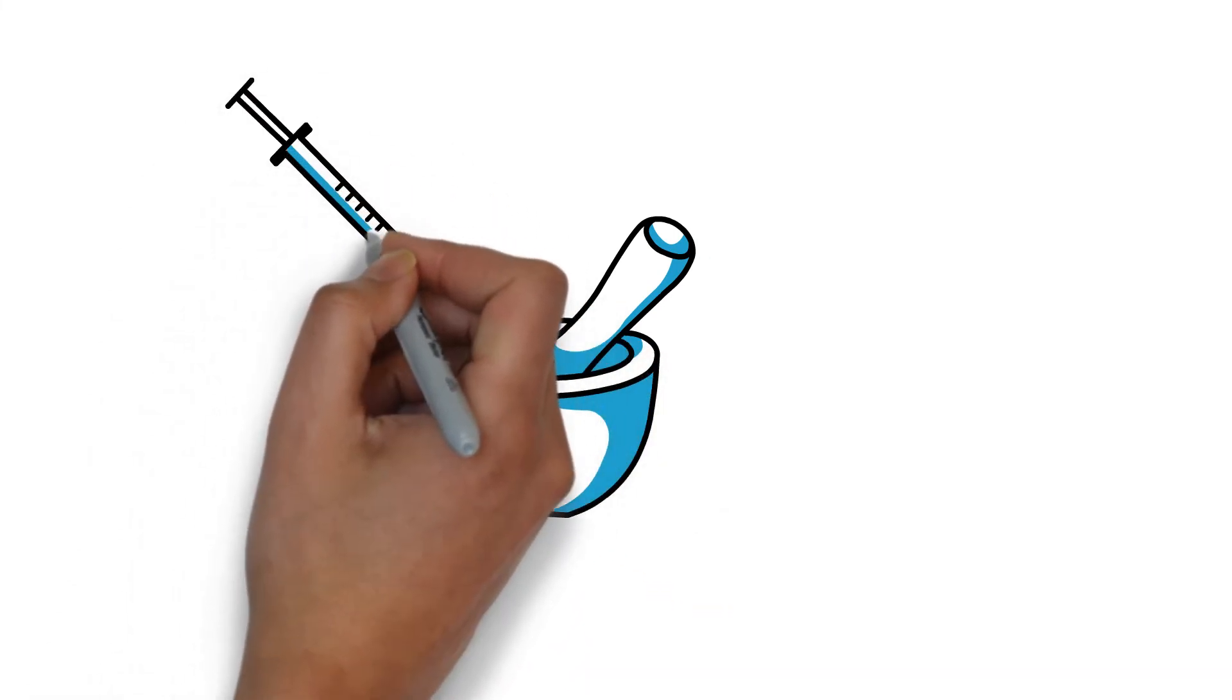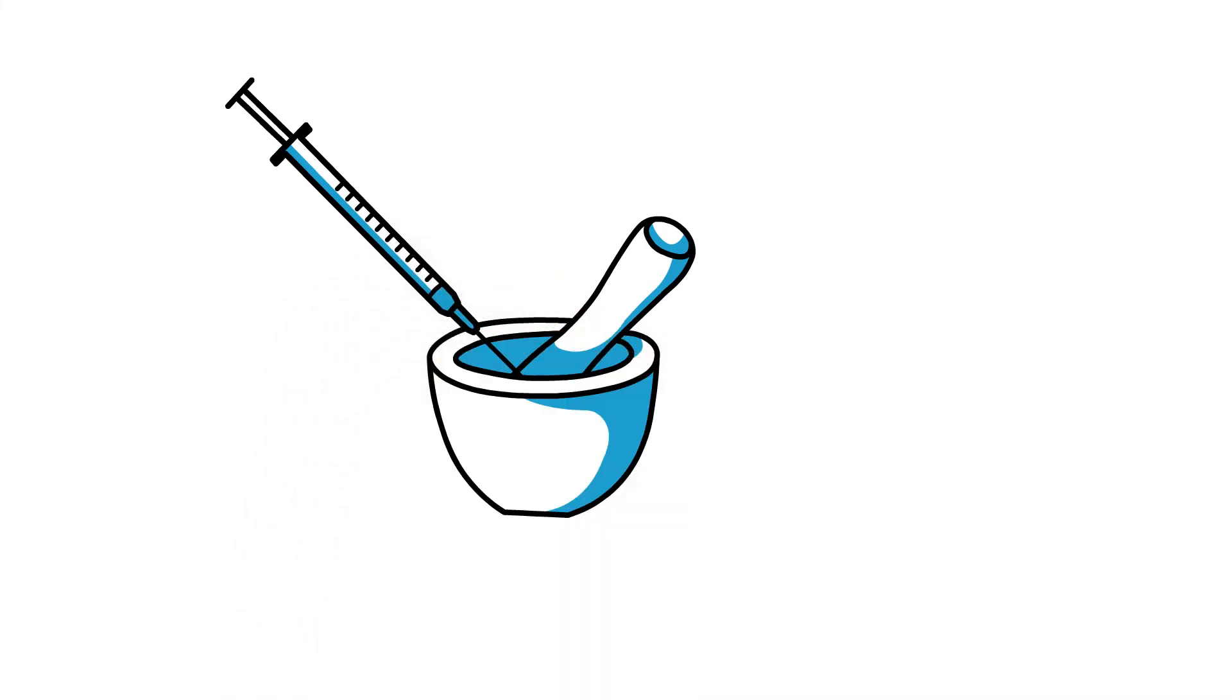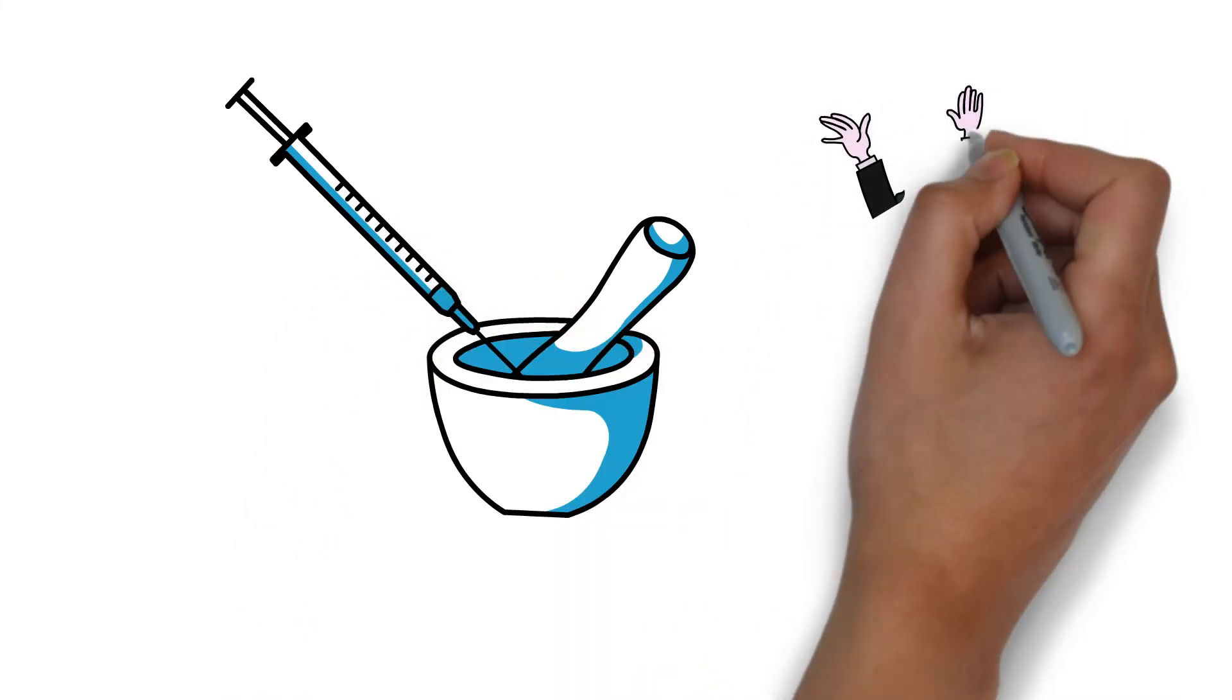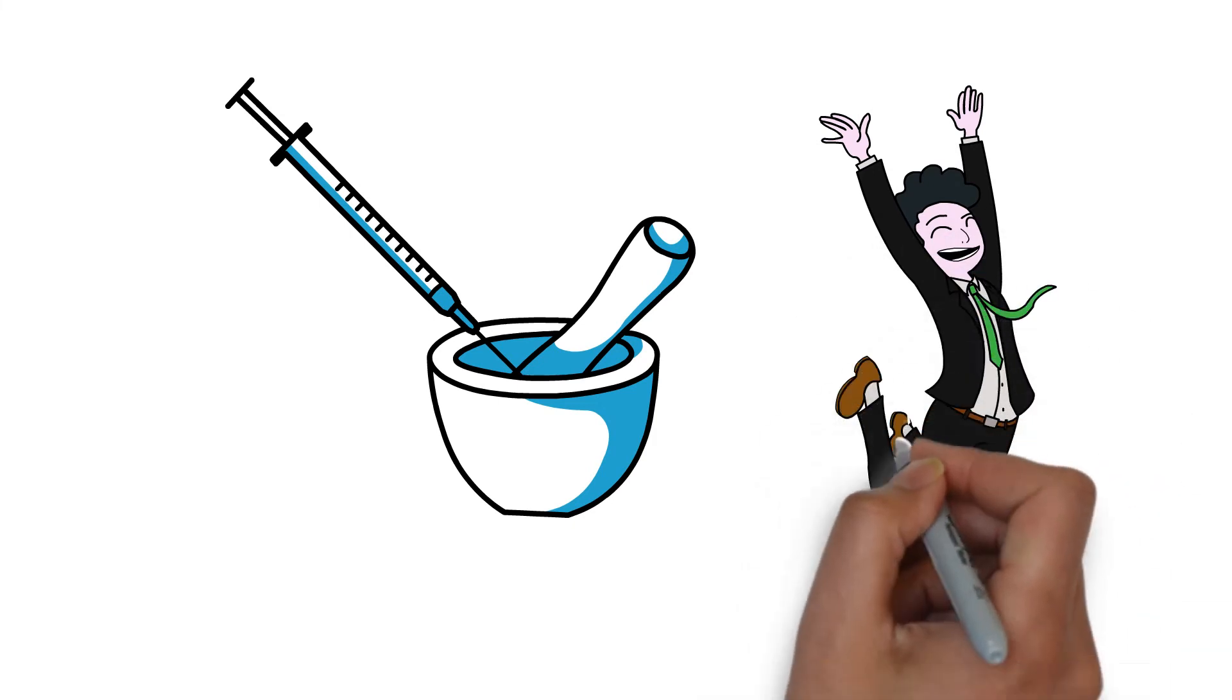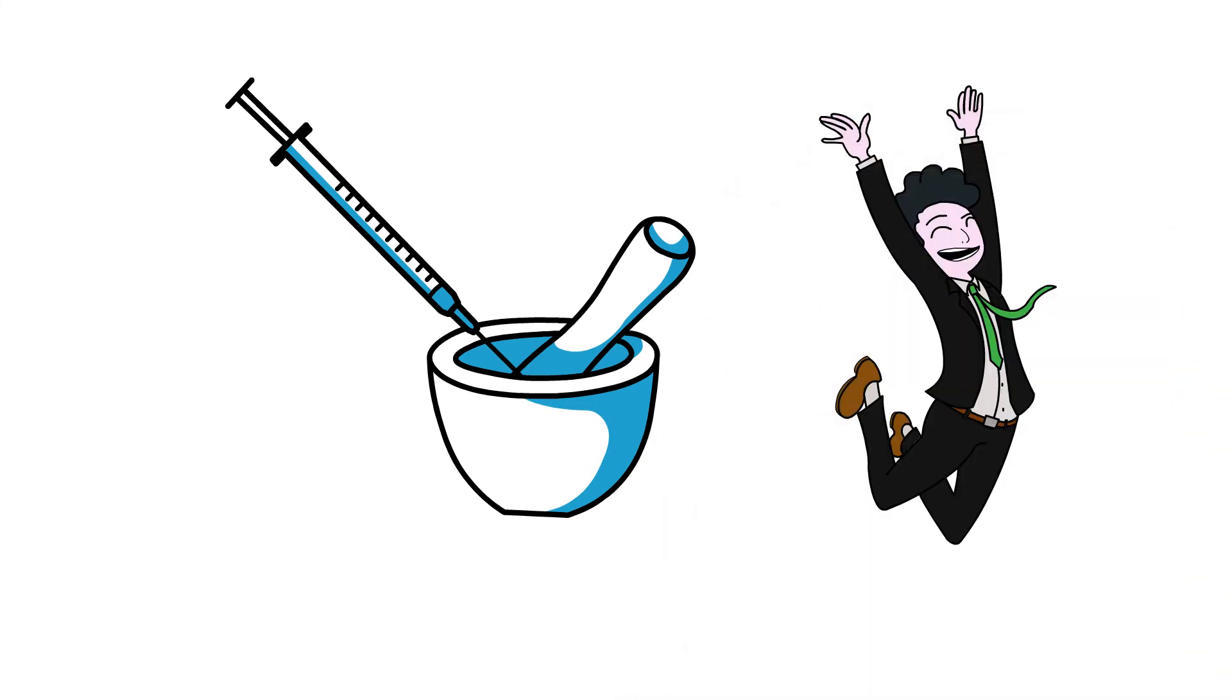Tablets that are formulated for immediate release can be crushed and taken intranasal or IV injection. These routes provide rapid drug entry into the brain, causing a high similar to that of cocaine or amphetamine.